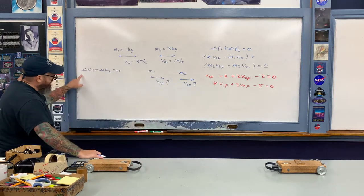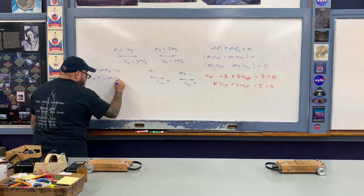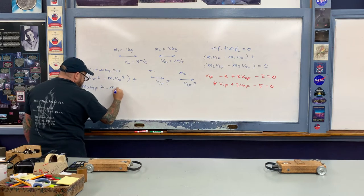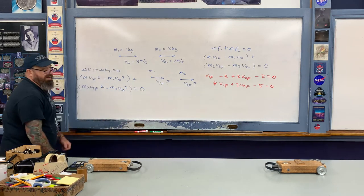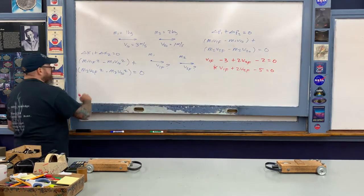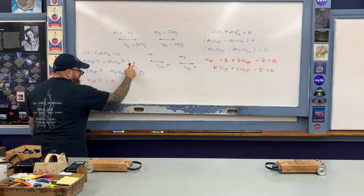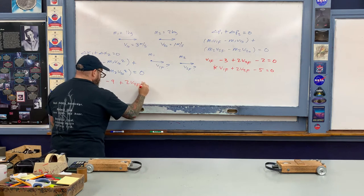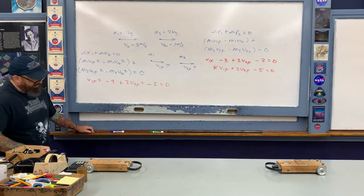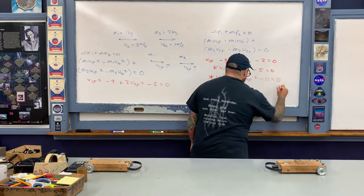For the change in kinetic energy of object one: m1·v1-final² minus m1·v1-naught², and for object two: m2·v2-final² minus m2·v2-naught². Plugging in numbers: 1·v1-final² minus 1·3² gives minus 9, plus 2·v2-final² minus 2·1² gives minus 2. Minus 9 minus 2 is minus 11, so the second equation is: v1-final² plus 2·v2-final² equals 11.